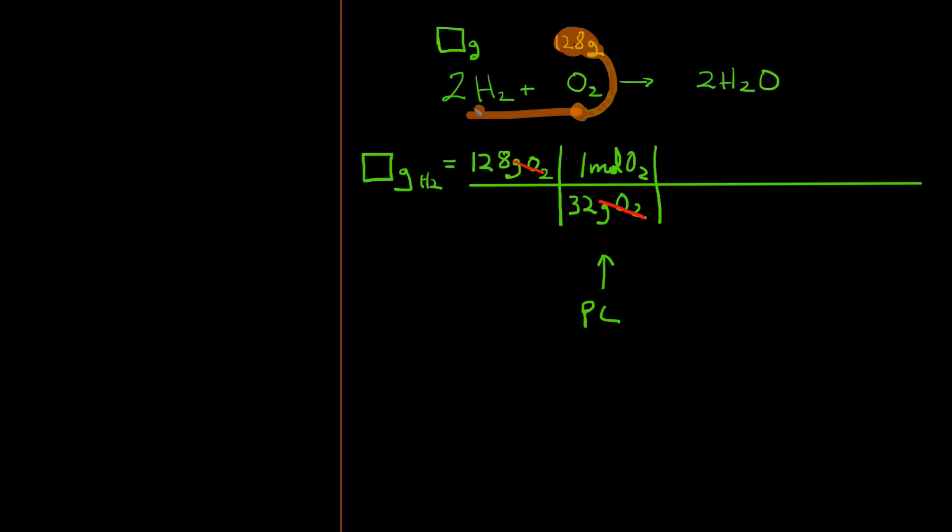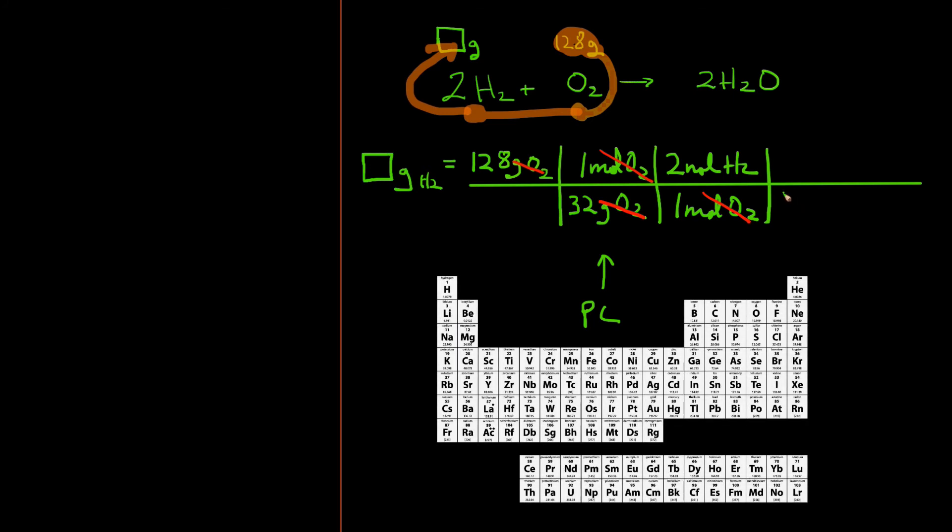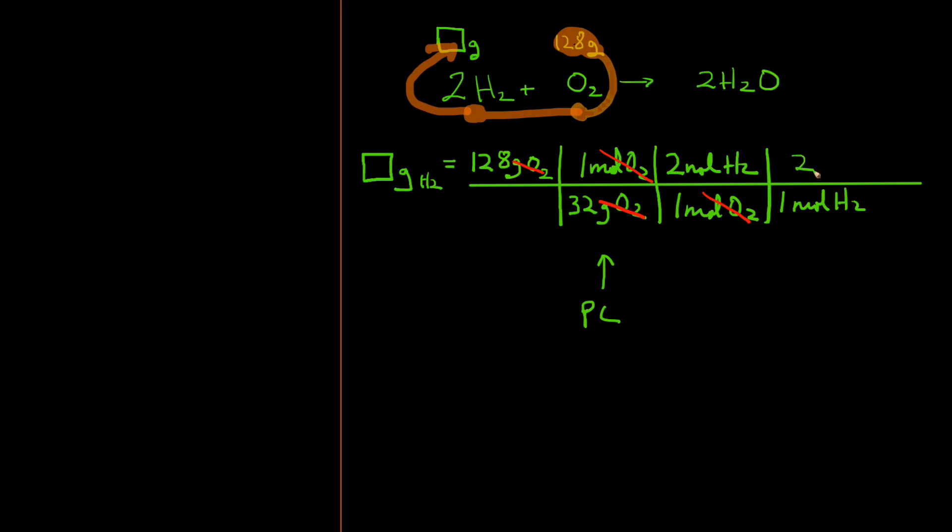Next I will convert from moles of O₂ to moles of H₂. This is accomplished by noting in the balanced chemical equation one mole of O₂ is balanced with two moles of H₂. And finally we need to complete the process by converting moles of H₂ to grams of H₂. We do this again noting from the periodic chart that one mole of H₂ weighs two grams.